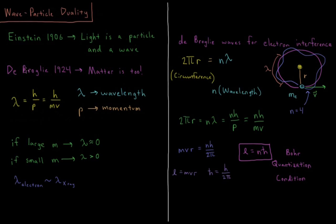In 1924 de Broglie had the inverse idea that matter can be both a particle and a wave as well, that matter is something that can have a wavelength.